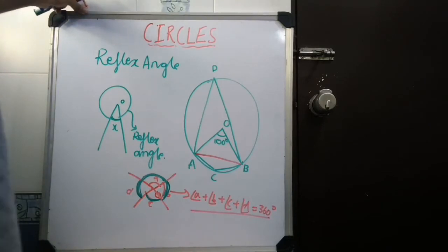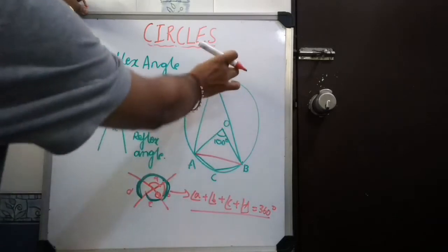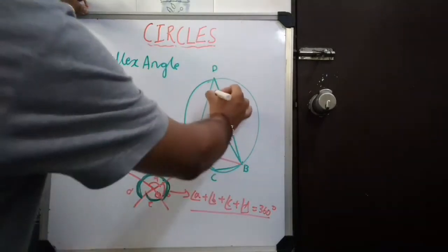Now, as we know according to theorem 1, the angle at the center is twice the angle at the circumference. So, this will be 50 degrees.